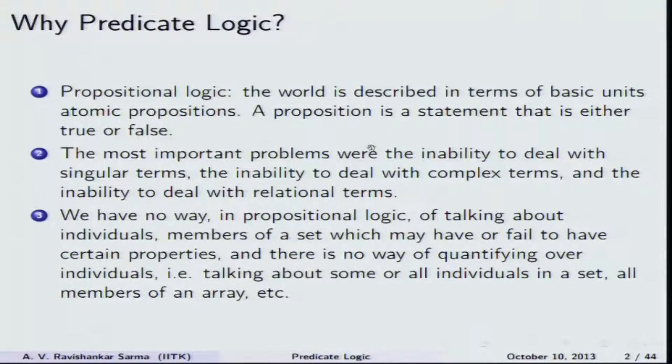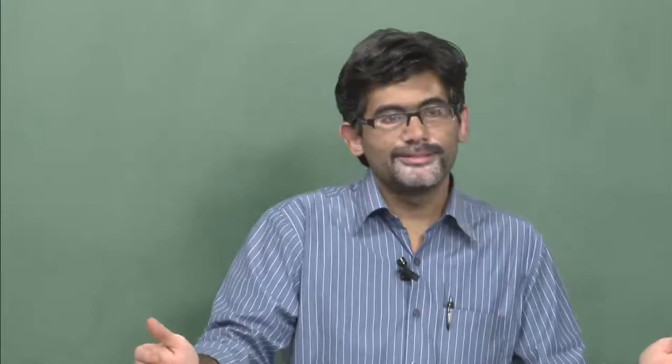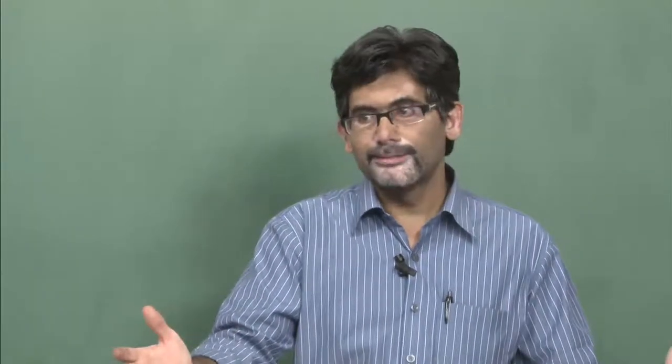In propositional logic, the world is described in terms of basic units called atomic propositions. An atomic proposition is a sentence that can be clearly spoken as either true or false; they can also be treated as declarative sentences. For example, a sentence like 'it is raining' is simply represented as P or not Q. A proposition is a statement that is either true or false, and these sentences are represented by sentential variables like P, Q, R, etc.